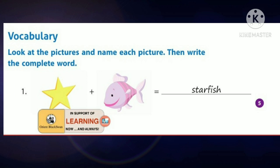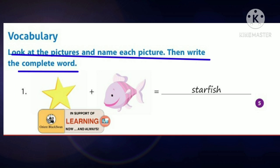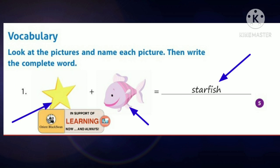Now let us do the textual activities on page number 5. Vocabulary: look at the pictures and name each picture, then write the complete word. First one: we can see a star and a fish — star plus fish. Star and fish combine to form starfish. All of you say: starfish.